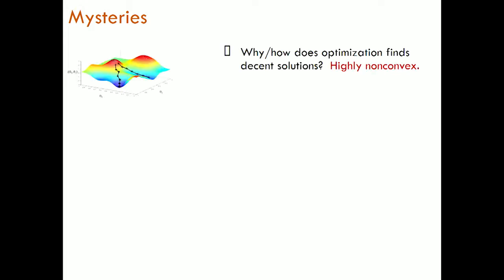In that basic setup, here are some mysteries. Why or how does optimization find a decent solution? This function is highly non-convex and gradient descent is just following the gradients. Why does it end up in any kind of globally good solution, if not a global optimum?